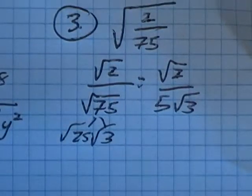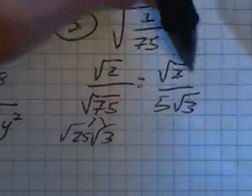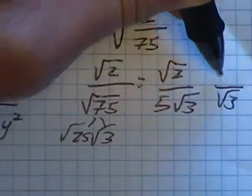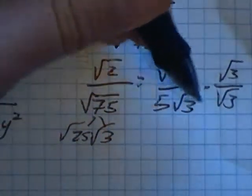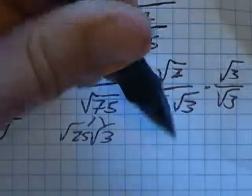So now my only issue is I have a root 3 down here in the denominator. So I'm going to get rid of it. I'm going to multiply this by this version of 1. And I'm doing that because root 2 times root 3 is root 6.